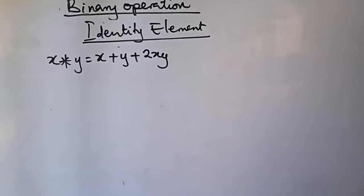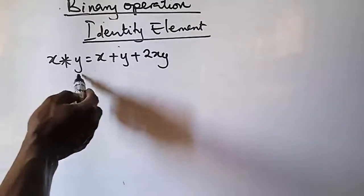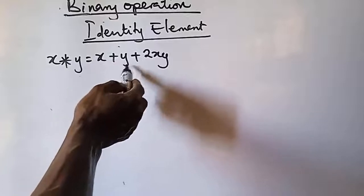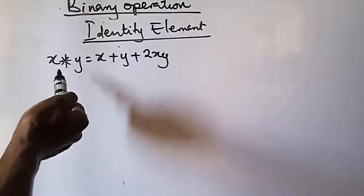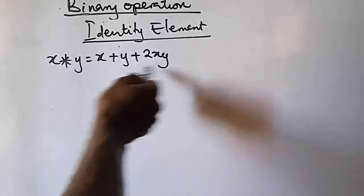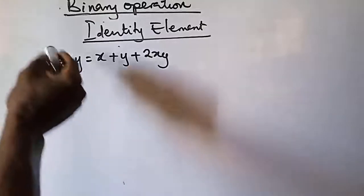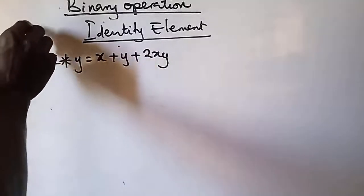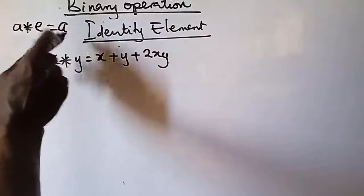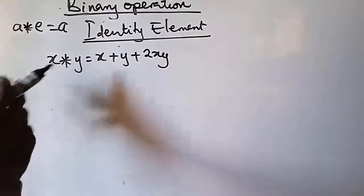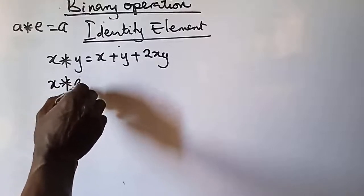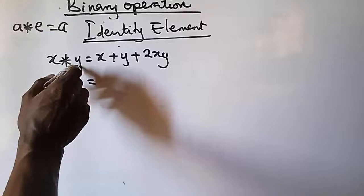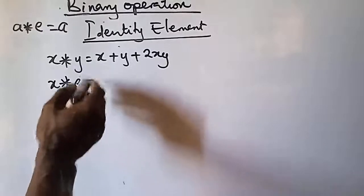Let's take one or two more examples for better understanding. In this example, x operation y gives us x + y + 2xy. We need to find the identity element for this operation. As we said, a operation e gives us a, so we apply that rule: x operation e.